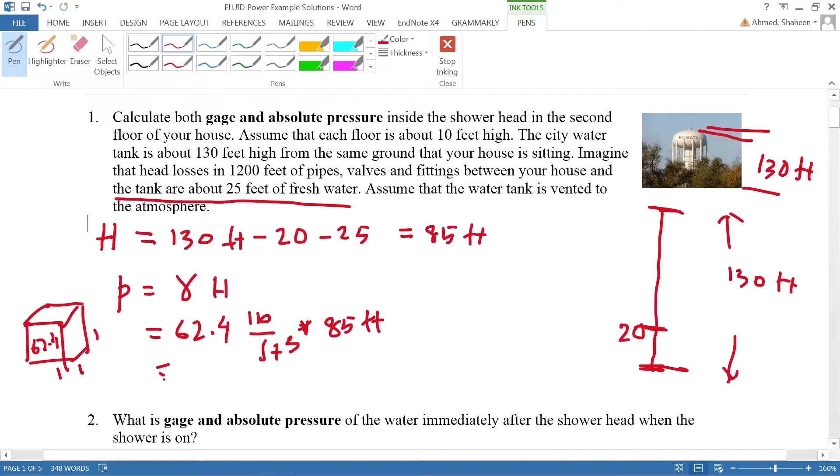This will come in pounds per square foot. To convert to PSI, one foot equals 12 inches, and since it's squared, I have to square the whole thing. If I calculate this, I get 36.13 PSI at the second floor shower head.